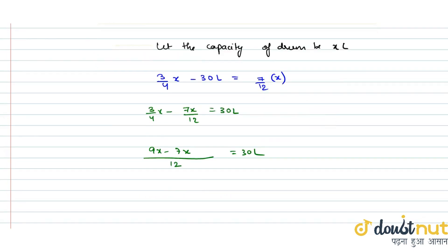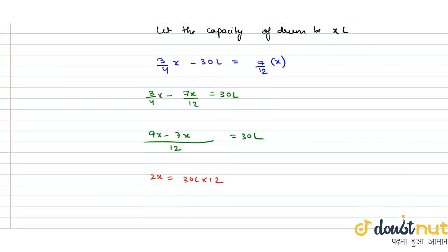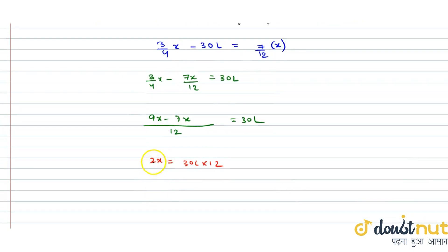That means 2x equals 30 liters multiplied by 12. Since 6 is cancelled out, x equals 180 liters. That means the total capacity of the drum is 180 liters.